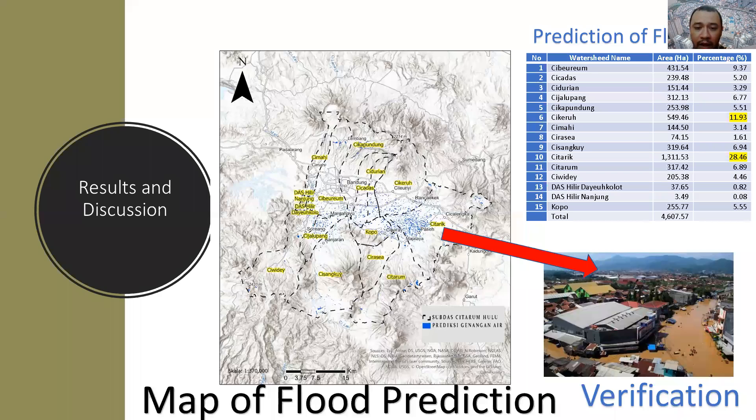This is the map of the area prediction of the flood in the upper Citarum watershed.